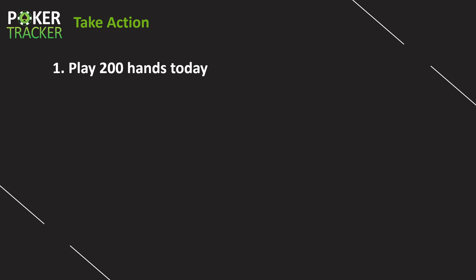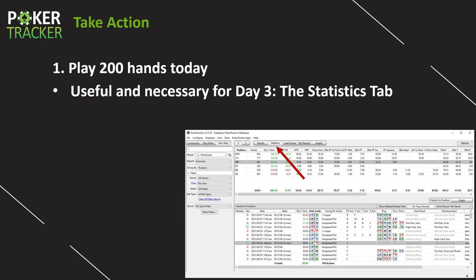Now it's time for our two action steps. Action step number one, just like yesterday, is to play 200 more hands today. If you played 200 yesterday and 200 today, you now have 400 hands to go through — this is going to be really useful and necessary for Day 3 tomorrow when we cover the statistics tab. We're actually going to dive into a few of my own losing and winning hands, go over the filters, and I'll show you a few very specific filters that might open your eyes to some big areas of opportunity.